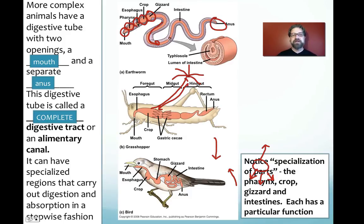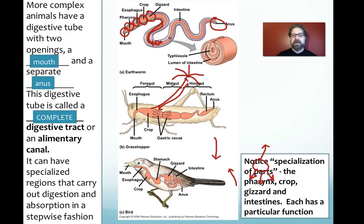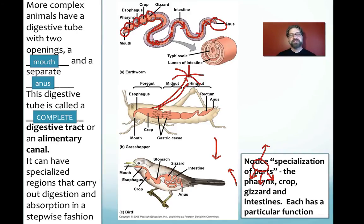Each specialized part does a specific job. The esophagus passes food from the pharynx to the crop, a holding area. The gizzard contains sand and small rocks to crush organic debris. The debris then travels through the intestine, extracting nutrients in every segment until what reaches the end is very nutrient-poor waste, stripped of nearly everything it started with.